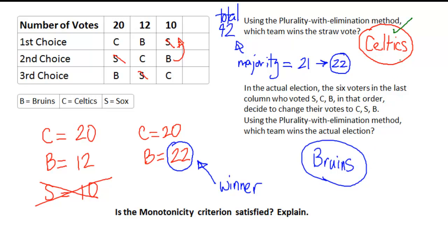But the Celtics did not win the re-election, the Bruins did. So is the monotonicity criterion satisfied in this case? Absolutely not. It's not satisfied.